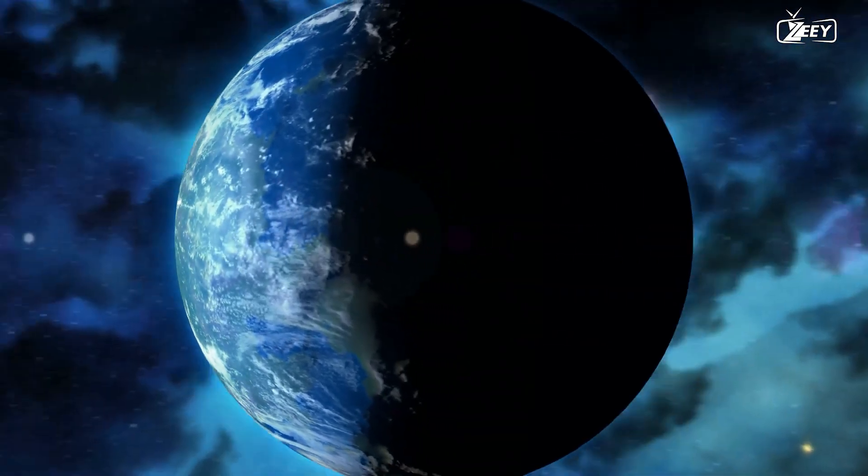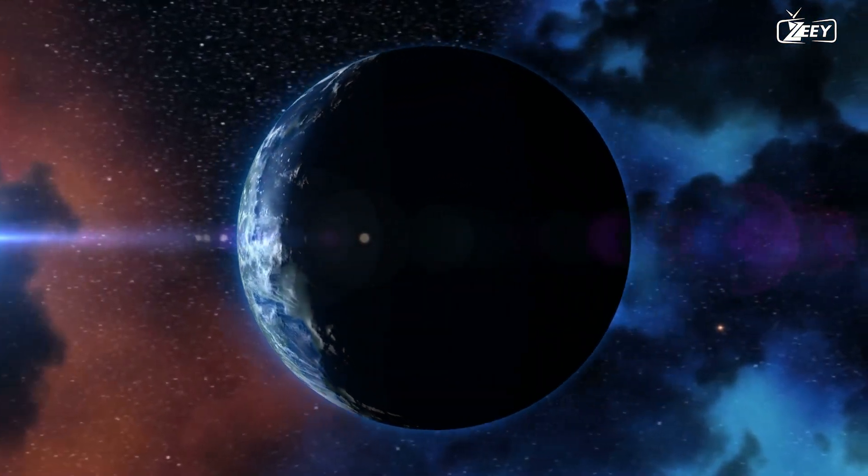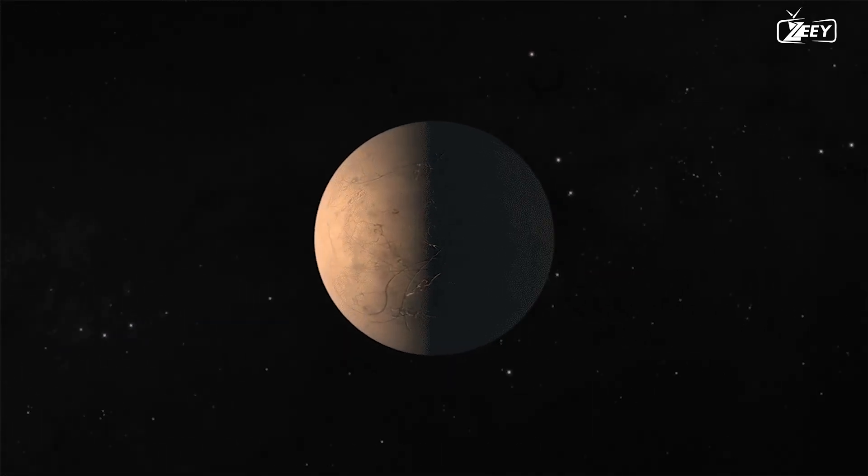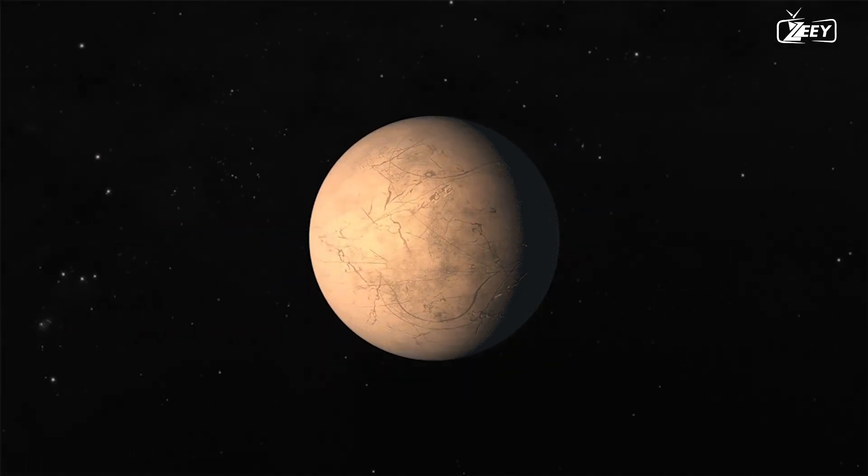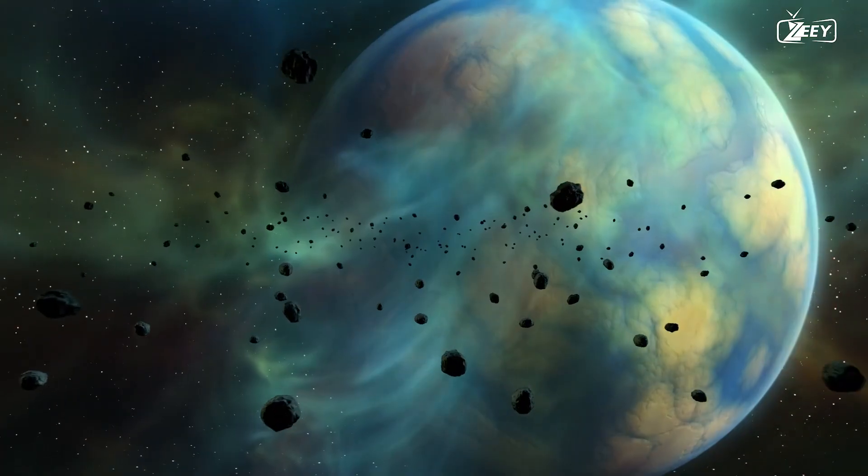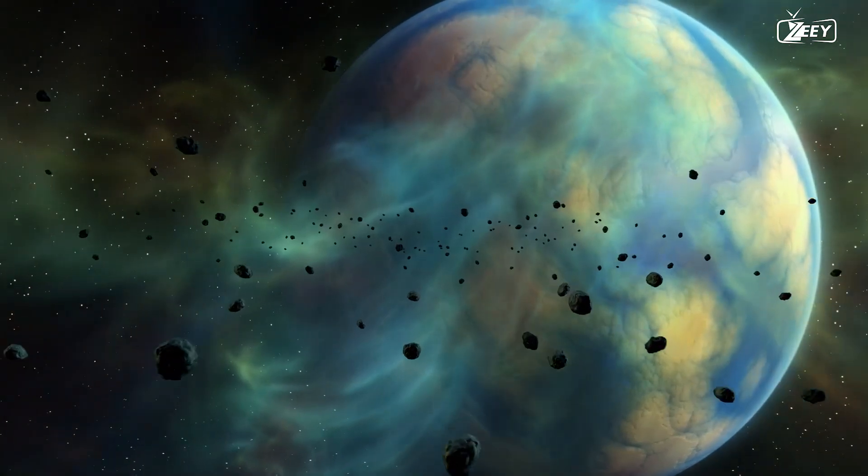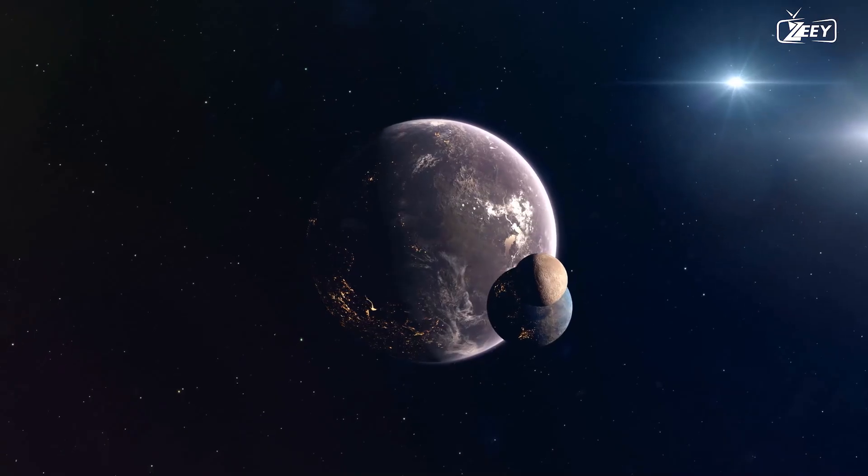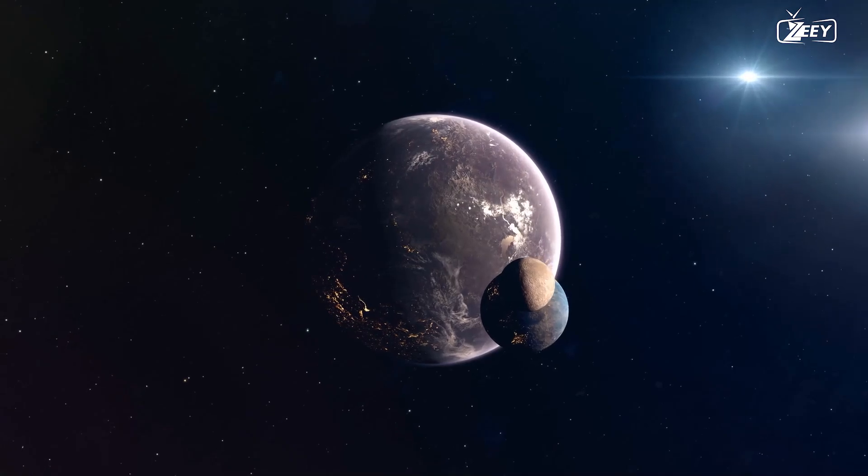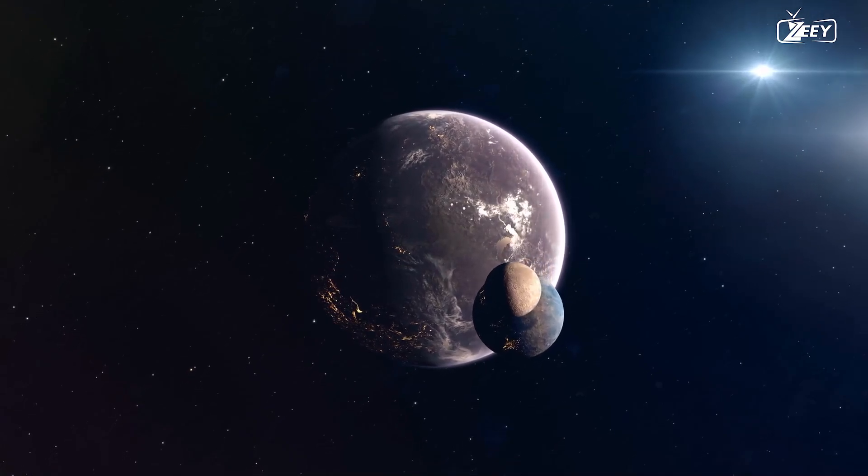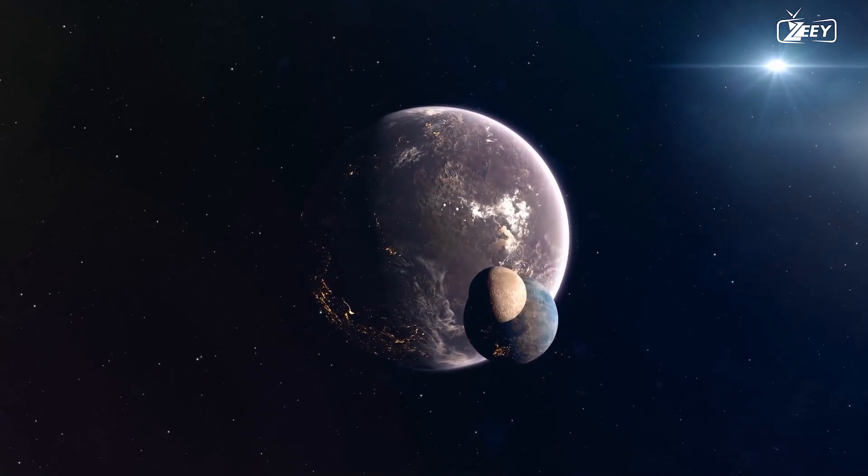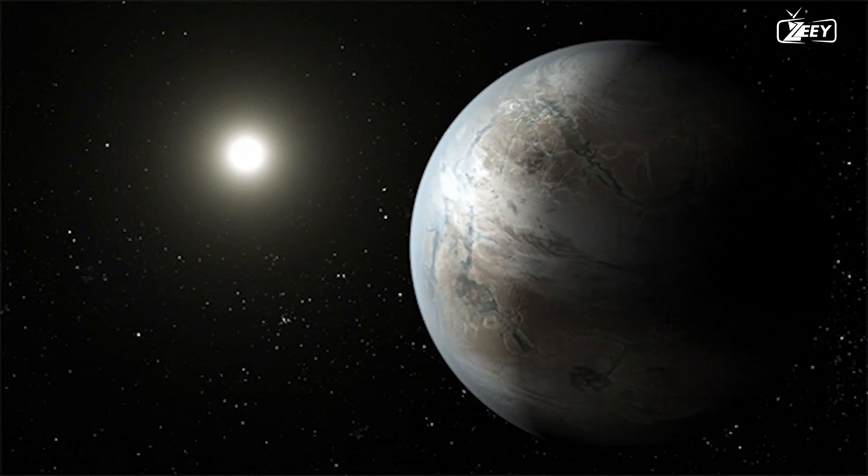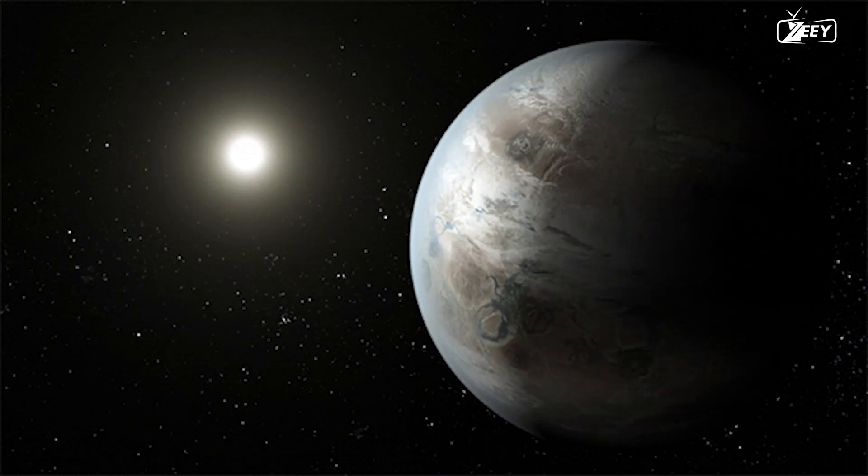Kepler-22b's discovery brings the search for planets like Earth one step closer, while scientists are yet unsure of whether its composition is primarily rocky, gaseous, or liquid. It's not easy to find planets the size of Earth or smaller. In reality, as we previously stated, the majority of contemporary techniques enable us to discover giant planets with large sizes and highly eccentric orbits. Yet, scientists occasionally strike it lucky.